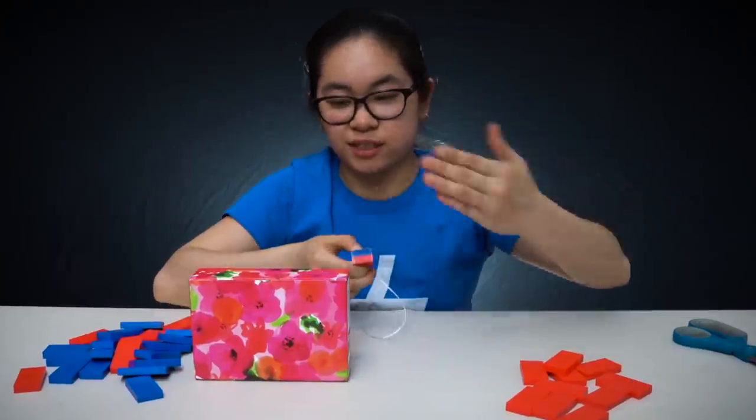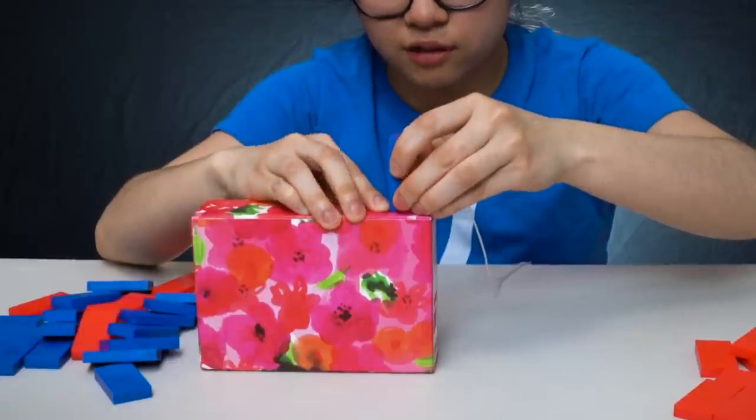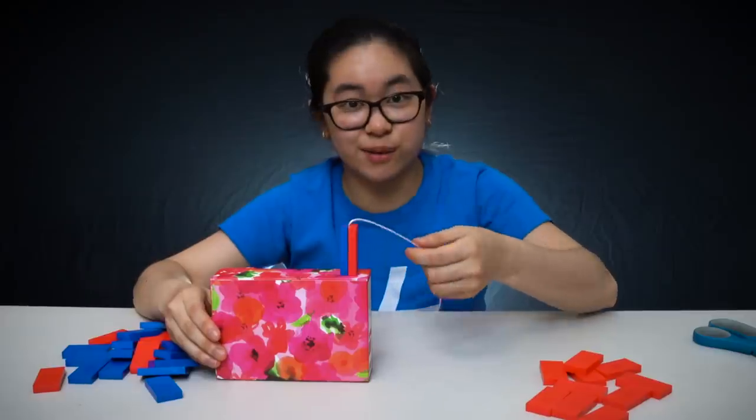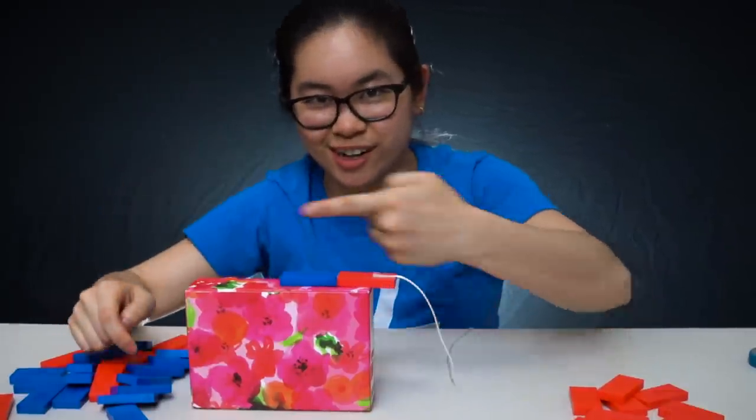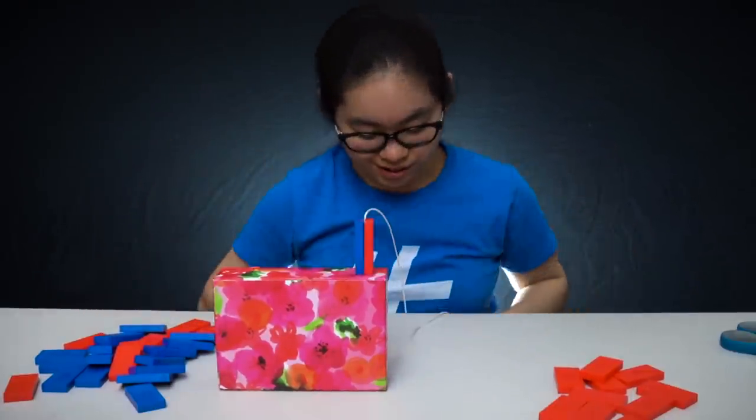Put it right here on the edge. If I pull the string, see how this blue domino goes in the right direction. Now you can take the other end of the string.